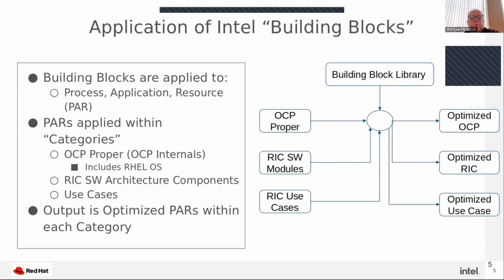We'd like to talk about applying the building blocks in three areas. Building blocks are applied to OCP proper — that is the OpenShift Container Platform itself. They are applied to an O-RAN component, namely the RAN Intelligent Controller, and in particular the software modules that are major components of the RIC. And then we'd like to talk about the RIC use cases, with the output being optimized OCP, optimized RIC, and optimized use cases in general.